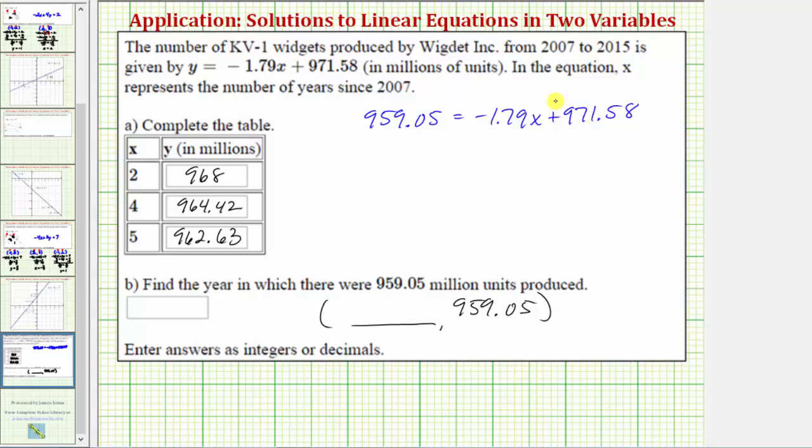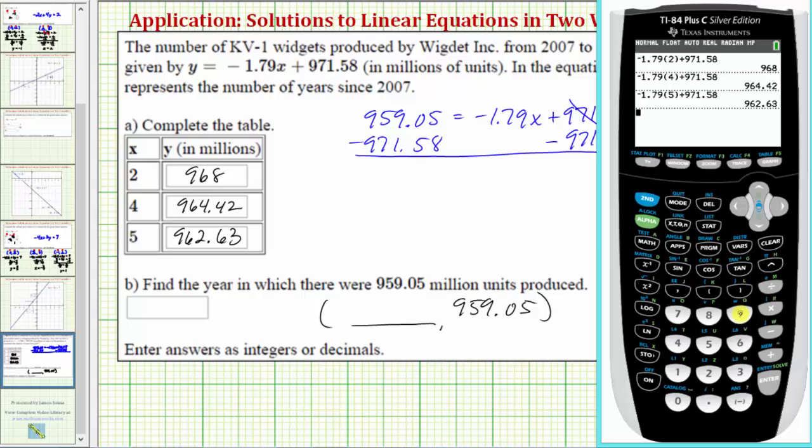So we'll first add or subtract to isolate the variable term. So we'll subtract 971.58 on both sides. Simplifying, this would be zero. Let's go ahead and find this difference. 959.05 minus 971.58 is equal to negative 12.53.